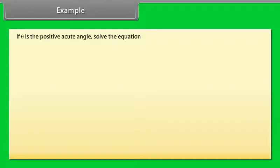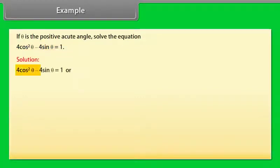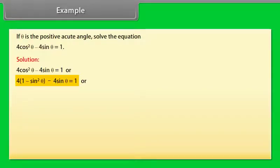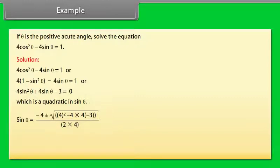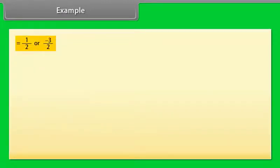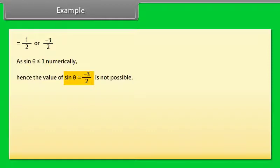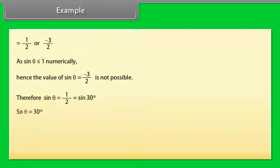Example: If θ is a positive acute angle, solve 4cos²θ − 4sin θ = 1. Solution: 4cos²θ − 4sin θ = 1, or 4(1 − sin²θ) − 4sin θ = 1, giving 4sin²θ + 4sin θ − 3 = 0. This is quadratic in sin θ. Using the quadratic formula: sin θ = (−4 ± √(16 + 48))/8 = (−4 ± 8)/8, giving sin θ = 1/2 or −3/2. Since |sin θ| ≤ 1, sin θ = −3/2 is not possible. Therefore sin θ = 1/2 = sin 30°, so θ = 30 degrees.